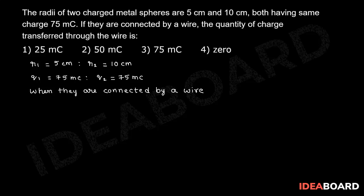potential becomes equal, and q proportional to c with c proportional to r. We know q1 dash is equal to r1 by r1 plus r2